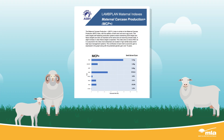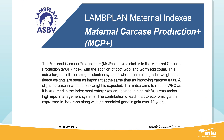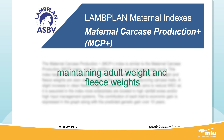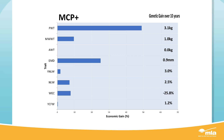Let's look at the Maternal Carcass Production Plus Index, or MCP Plus, aimed at maternal producers with a majority of income from sheep sales. The index description is for self-replacing maternal flocks where you want to simultaneously improve carcass traits and reproduction, reduce worm egg counts, and maintain adult ewe weight and fleece weights. Here are the traits that make up the MCP Plus Index.